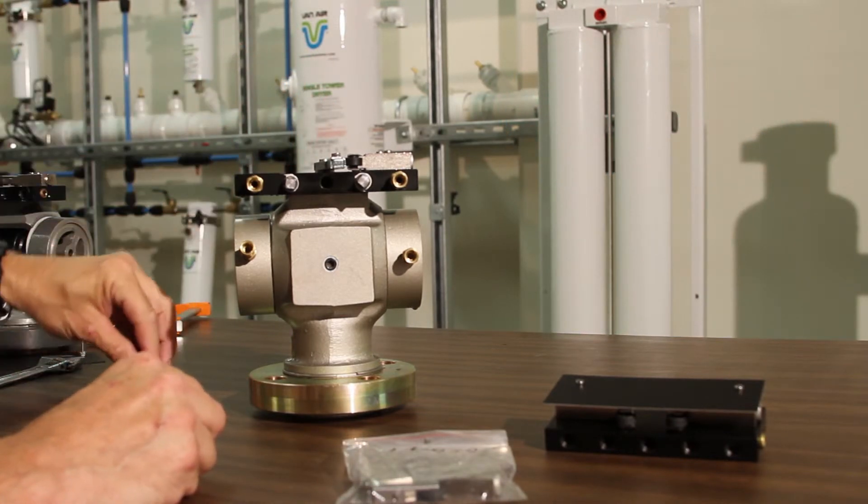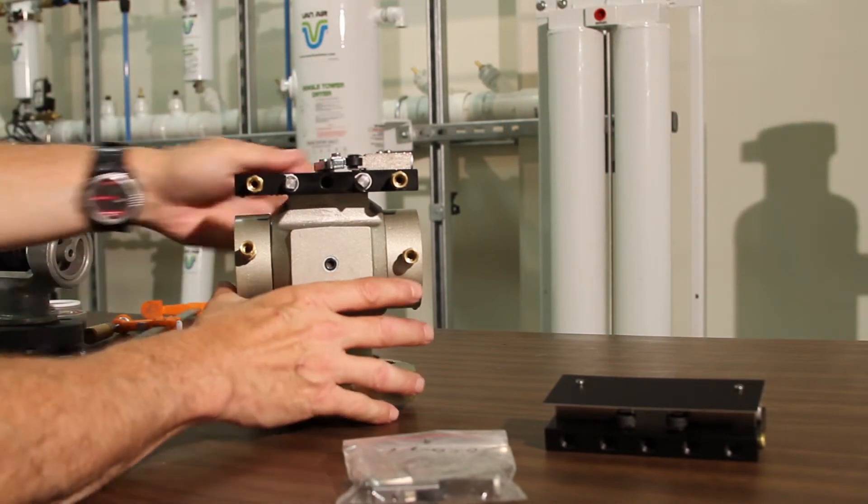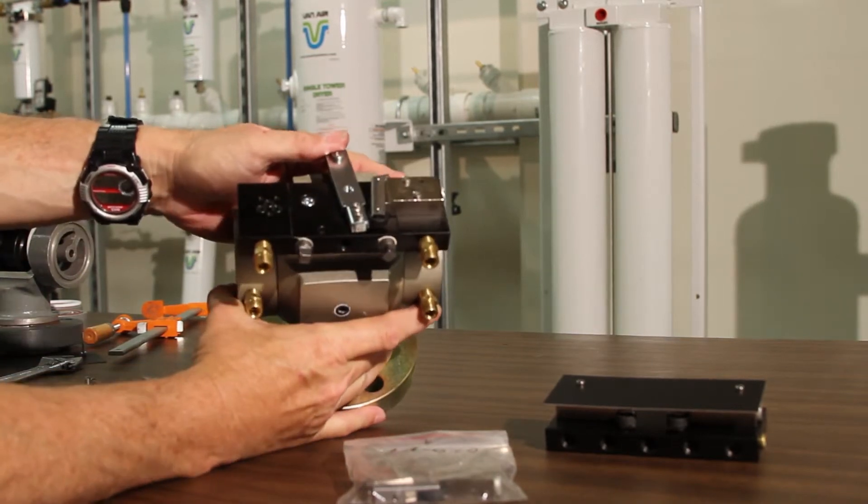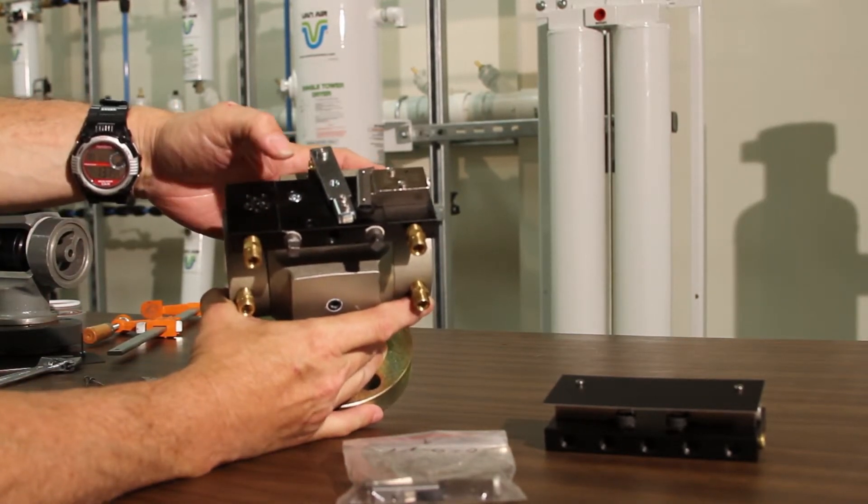And you're going to see, after you take the screws out, that underneath each one of the pneumatic limit switches, there's three O-ring seals in there.